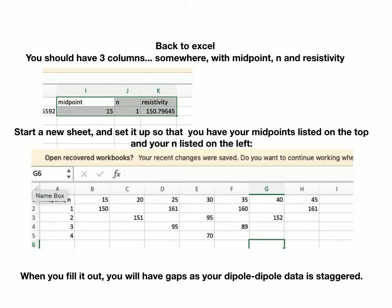So for this particular reading here, for instance, with the potentials of 10 and 20, we wrote down a resistivity for n equals 1 of 150. And this is just an example. This is not your data.